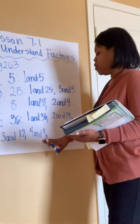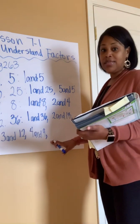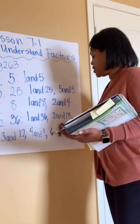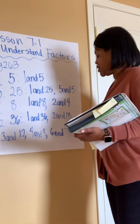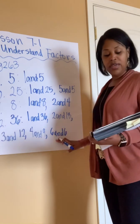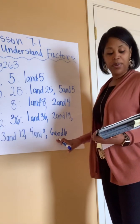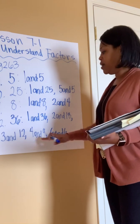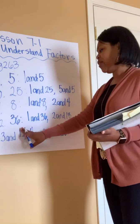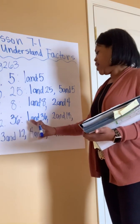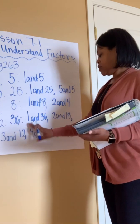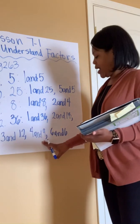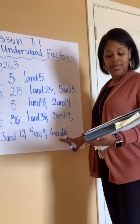So my next number I will try is 6. I know that 6 times 6 is 36. So 6 and 6 will be the next factor pair for 36. So I noticed that 36 has a lot of factor pairs: 1 and 36, 2 and 18, 3 and 12, 4 and 9, and 6 and 6.